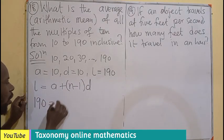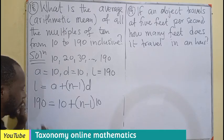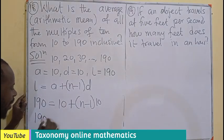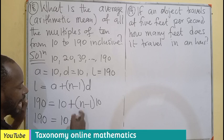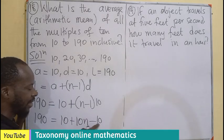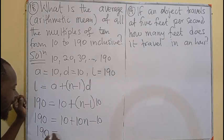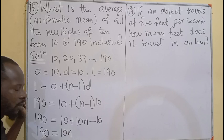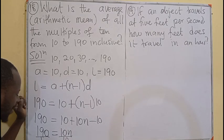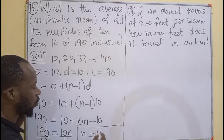So, 190 will now be equals to 10 plus N minus 1 times 10. Let's expand this bracket. 10 times N will be 10N minus 1 times 10 will be 10. I believe you can see that 10 minus 10 will be 0. So we are left with 10N equals 190. I'm sure you can see that we need to find the N. So, dividing by 10, will make N equals 19.